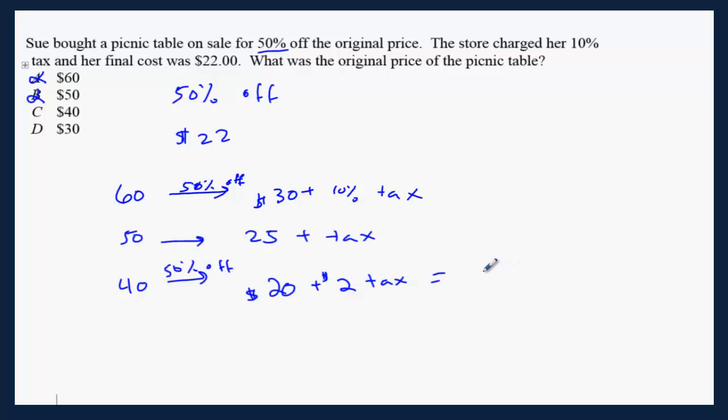$20 plus $2, that's going to be $22, and that's choice C.